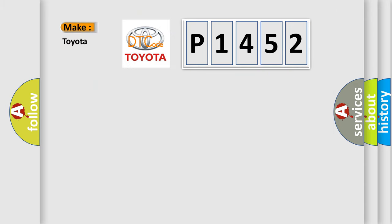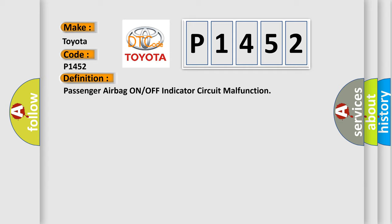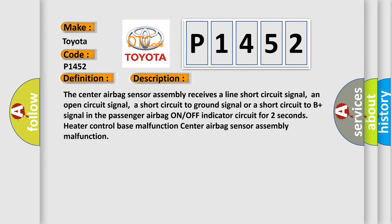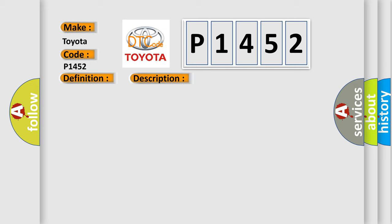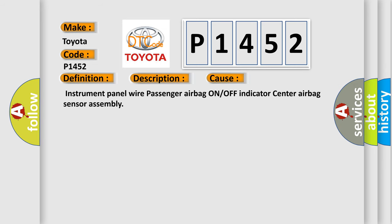So, what does the diagnostic trouble code P1452 interpret specifically? Toyota car manufacturers. The basic definition is: Passenger airbag ON or OFF indicator circuit malfunction. The center airbag sensor assembly receives a line short circuit signal, an open circuit signal, a short circuit to ground signal, or a short circuit to B+ signal in the passenger airbag ON/OFF indicator circuit for two seconds — heater control base malfunction, center airbag sensor assembly malfunction. This diagnostic error occurs most often in these cases: instrument panel wire, passenger airbag ON or OFF indicator, center airbag sensor assembly.